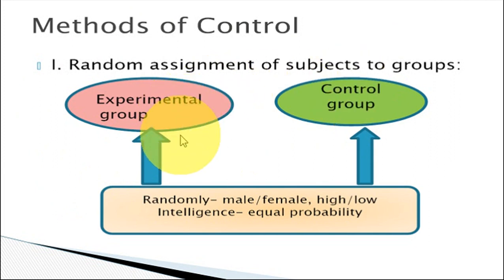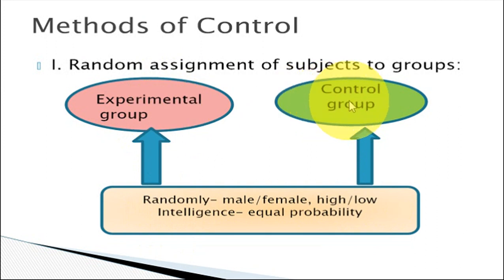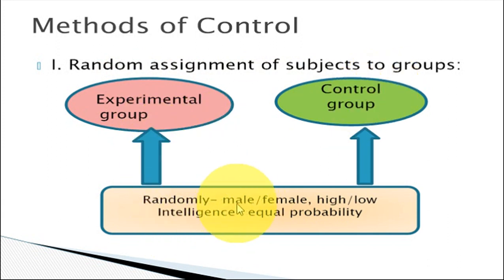If we select subjects in a biased manner into experimental and control groups, it will affect the validity of the experimental research. To avoid the impact on internal validity, one method is random assignment — randomly selecting males, females, students of high or low intelligence, and putting them one in the experimental group and others in the control group. Each unit selected has an equal probability of being assigned to either group, so there will be no biasness.